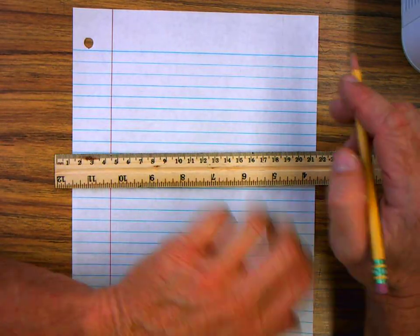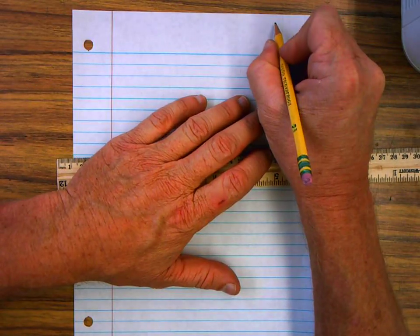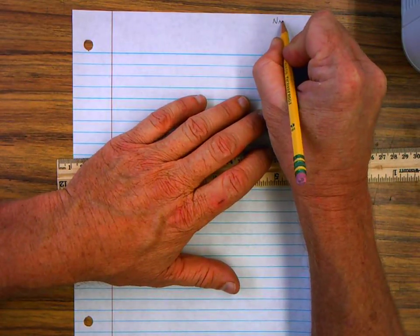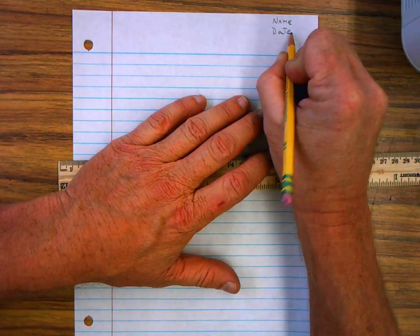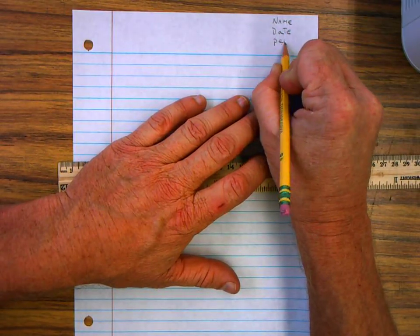So we're going to make a data table and in the upper right hand corner you need to put your name, the date, and the period.